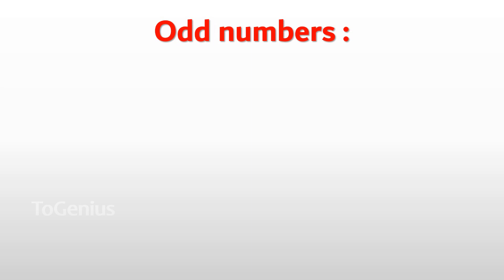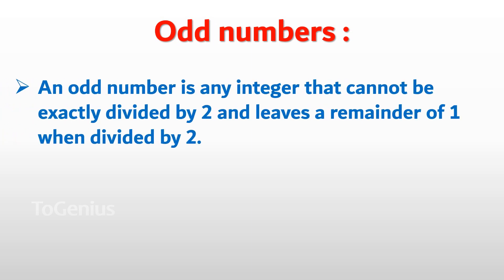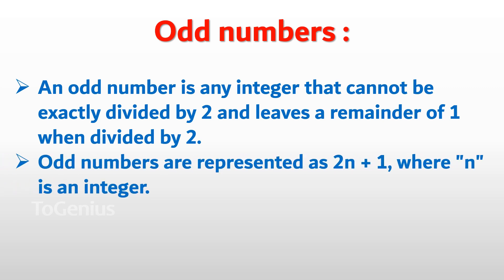Next, odd numbers. An odd number is any integer that cannot be exactly divided by 2 and leaves a remainder of 1 when divided by 2. Odd numbers are represented as 2n + 1, where n is an integer.